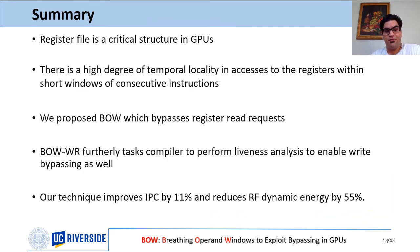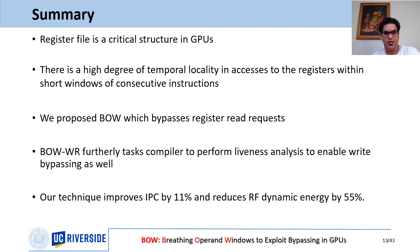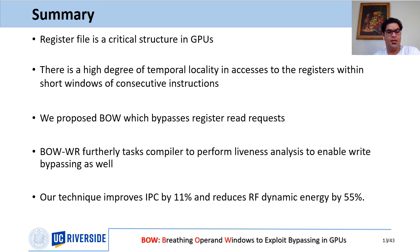To conclude, the register file is a critical structure in GPUs in terms of performance and power consumption. Our main observation is that there is a high degree of temporal locality in accesses to registers within short windows of consecutive instructions. We proposed BO and BOWR: BO is our baseline design and bypasses register read requests using a write-through philosophy; BOWR is the enhanced design that uses compiler liveness analysis to enable both write and read bypassing. Our technique achieves 11% IPC improvement and 55% reduction in register file dynamic energy.